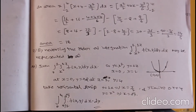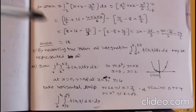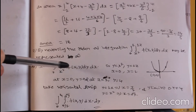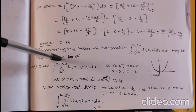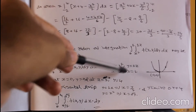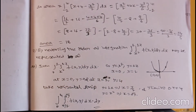Question two: by reversing the order of integration, ∫₀² ∫_{x²}^{2x} f(x,y) dy dx may be represented as what? We have to find new limits after interchanging the order of integration. The y limits are y = x² and y = 2x, and the x limits are x = 0 to x = 2.